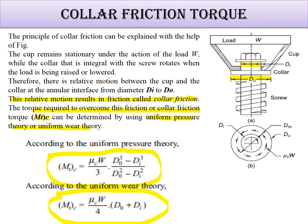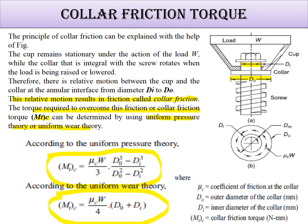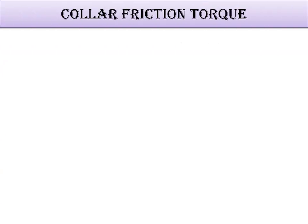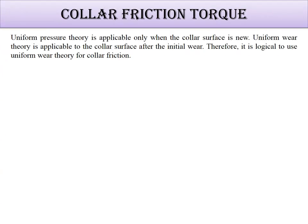We must know when to use uniform wear theory versus uniform pressure theory. μC is the coefficient of friction at the collar, Do is the outer diameter of the collar, and Di is the inner diameter of the collar.